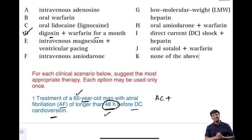The answer is D — digoxin plus warfarin should be given for a month. You also have sotalol plus warfarin as an option, but sotalol is not preferred as first-line treatment for atrial fibrillation. During the anticoagulation period, ventricular rate is controlled by prescribing digoxin.